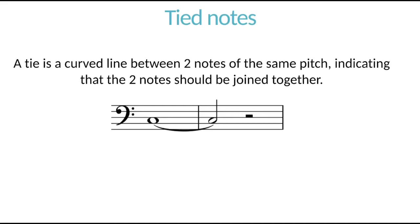So tied notes. A tie, as you know, is a curved line which joins notes of the same pitch. That's the crucial thing. They have to be of the same pitch. Two notes are joined together. Here's a six-beat note. And that's the purpose of ties.